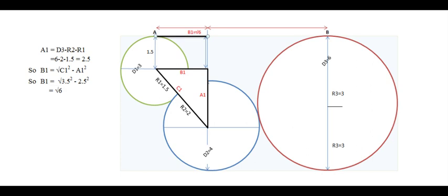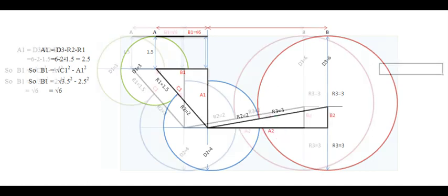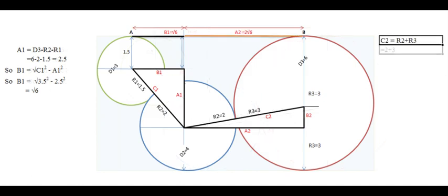Now, let us find remaining length. Once more we will draw a triangle like this. Here also we have the distance C2 with us, which is a sum of R2 and R3. The value of C2 will be equal to 2 plus 3, which is equal to 5.